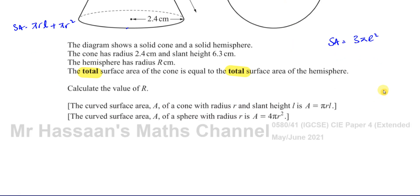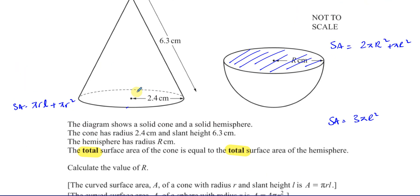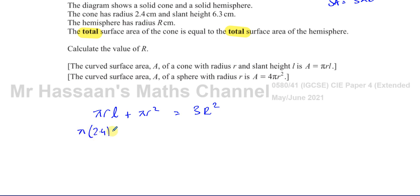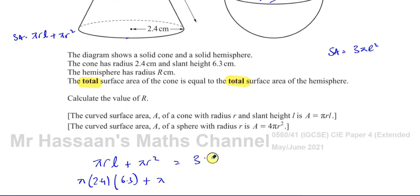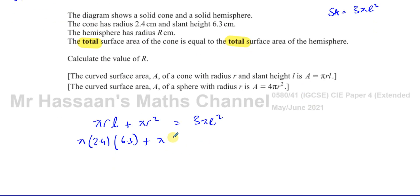We know that these two are equal to each other. The total surface area of the cone — which is πR times the slant height plus πR² — is equal to the total surface area of the hemisphere. So we can just put the values in now. We know that the cone's radius is 2.4, so: π × 2.4 × 6.3 + π × 2.4² = 3πR².